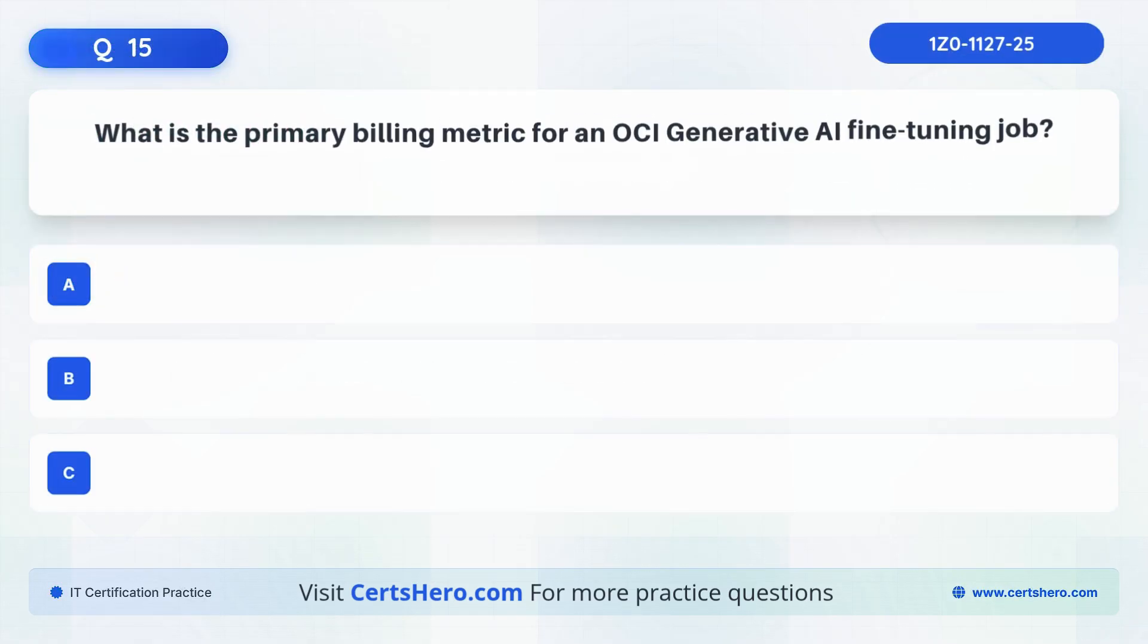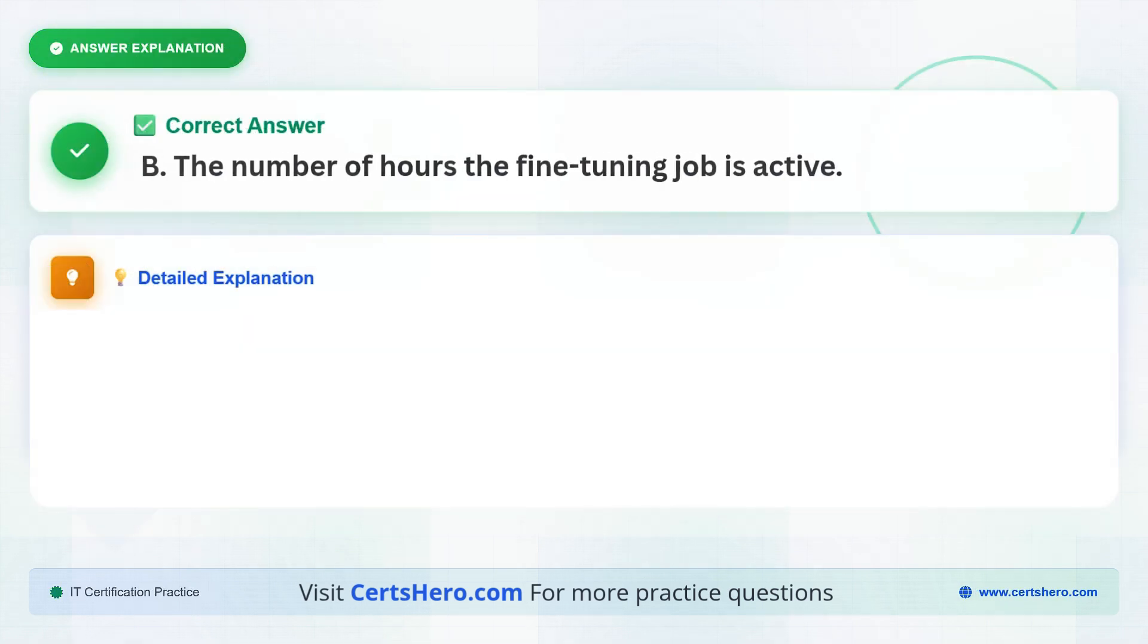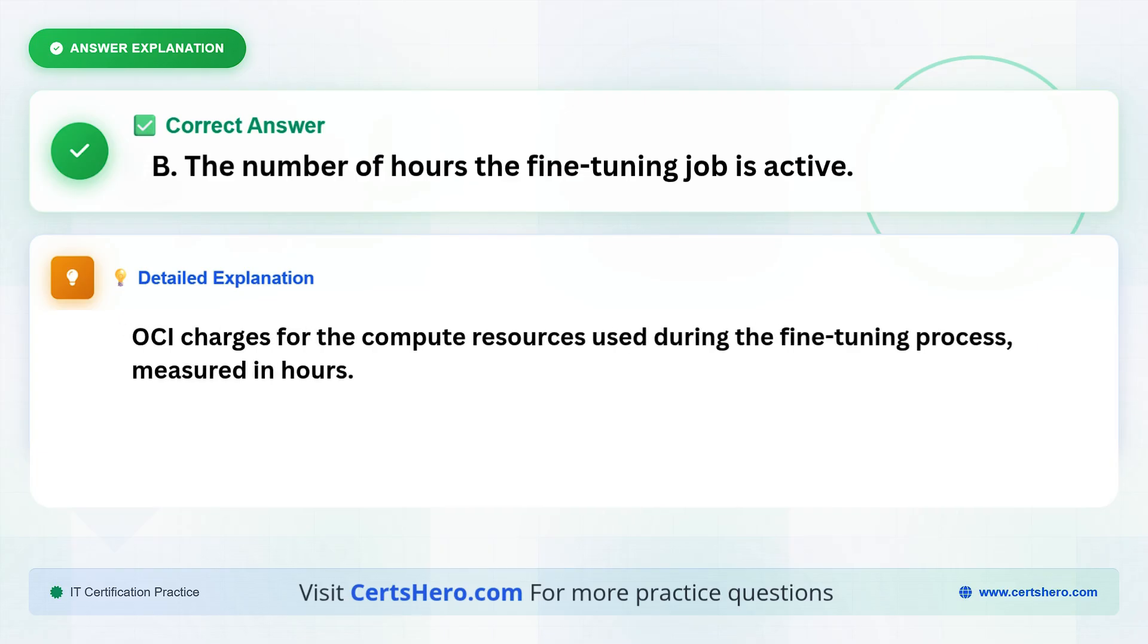Question 15. What is the primary billing metric for an OCI generative AI fine-tuning job? Is it the number of tokens in the training dataset, the number of hours the fine-tuning job is active, or the number of epochs specified for training? The correct answer is B, the number of hours the fine-tuning job is active. OCI charges for the compute resources used during the fine-tuning process, measured in hours.